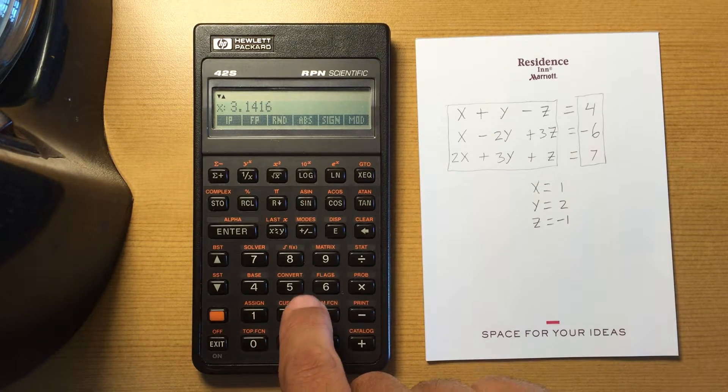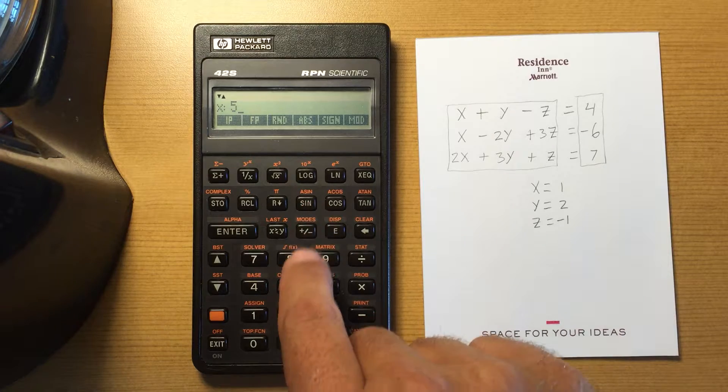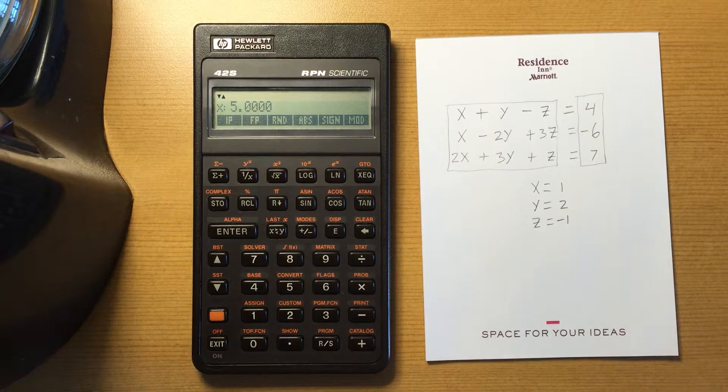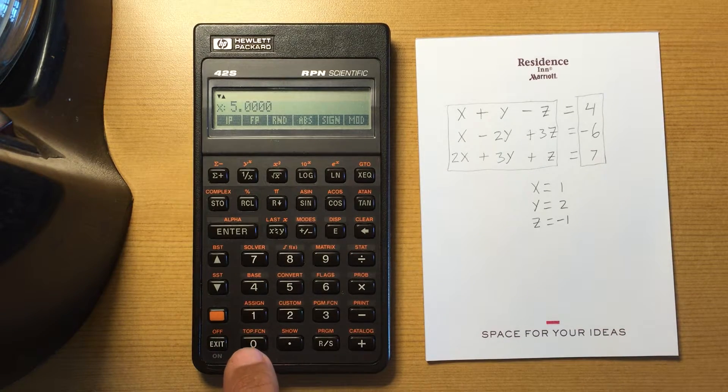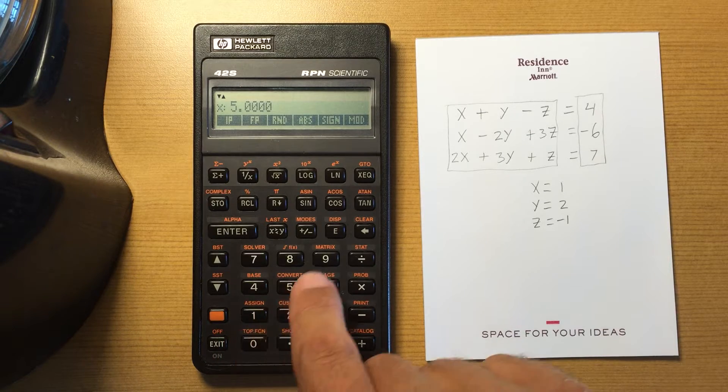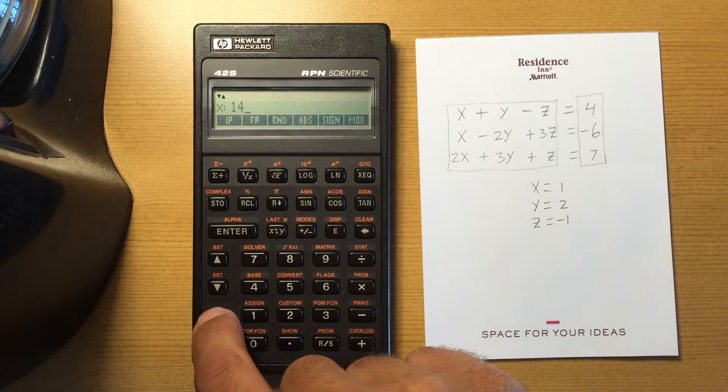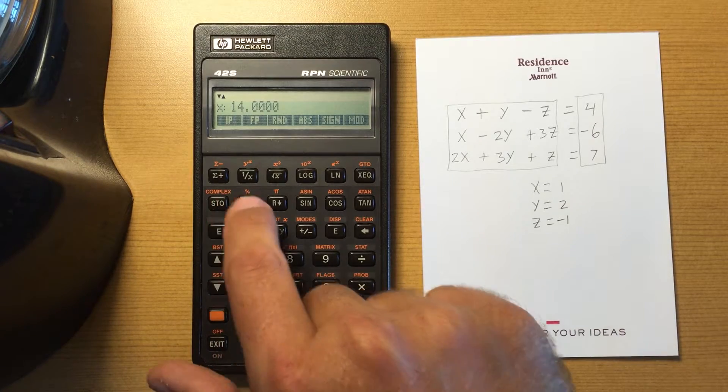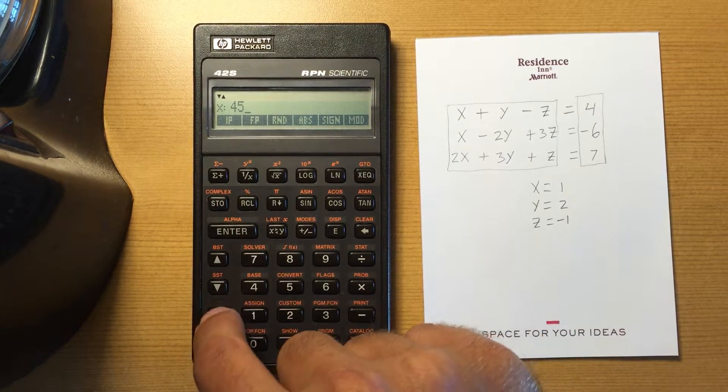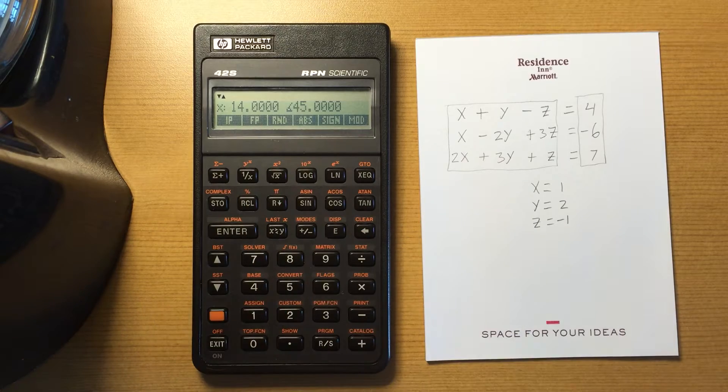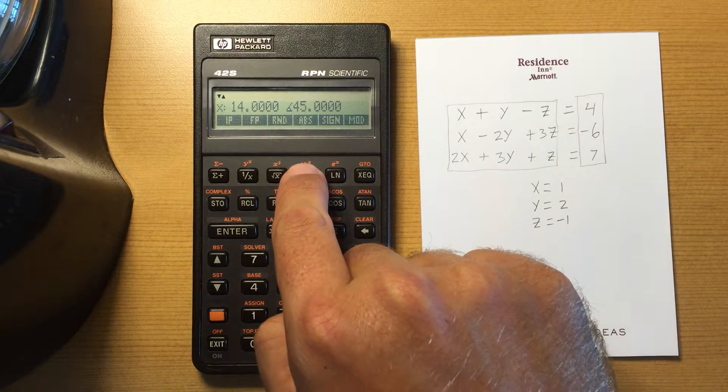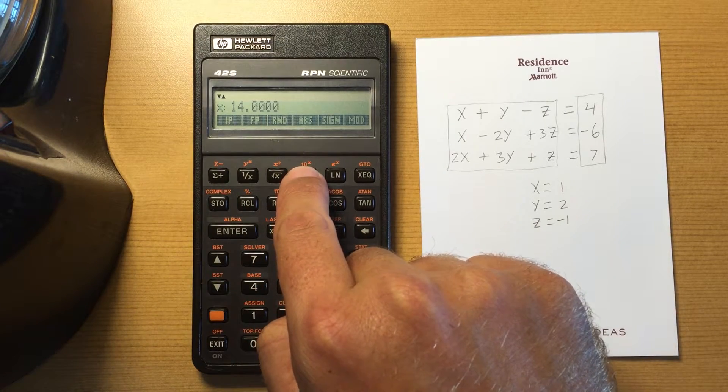Okay, absolute value. I can take the absolute value of that, or that could be useful for entering in, say, a complex number. So I've got 14 and 45 complex, and I take the absolute of that, I get 14.